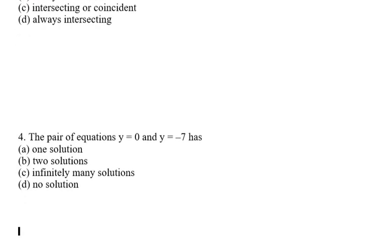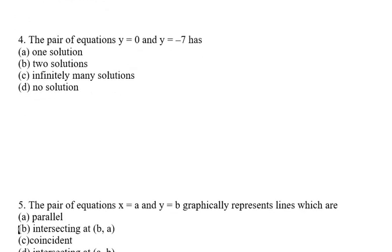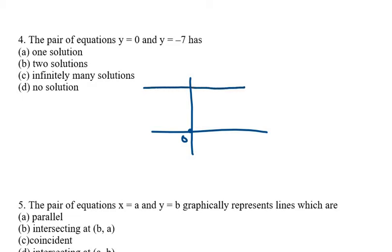Question number four: the pair of equations y = 0 and y = −7 — has one solution, two solutions, infinitely many solutions, or no solution? These two equations have different y values. Drawing them: y = 0 lies on the x-axis and y = −7 is a horizontal line below it. They are parallel and cannot intersect, so there is no solution. The correct option is D.